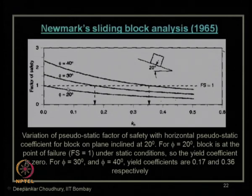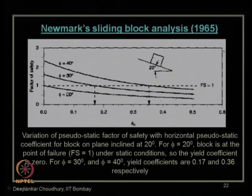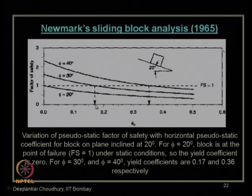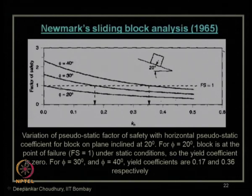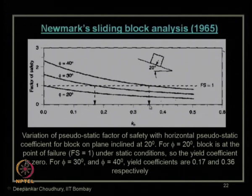The yield acceleration is found where the factor of safety curve intersects the line FS = 1. For φ = 30°, stability holds up to about 0.165–0.17 g; beyond that, displacement occurs and must be computed. For φ = 40°, the slope is stable up to about 0.35 g. Beyond that value, it becomes unstable and starts sliding; the displacement is calculated using the yield acceleration.